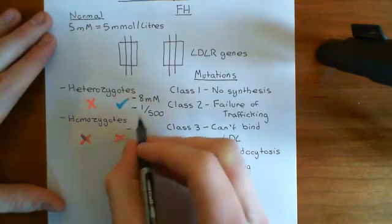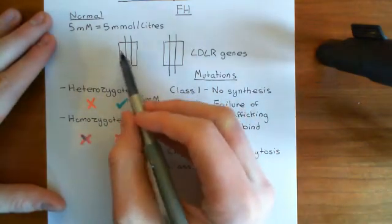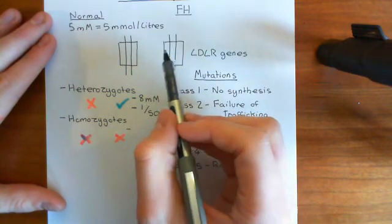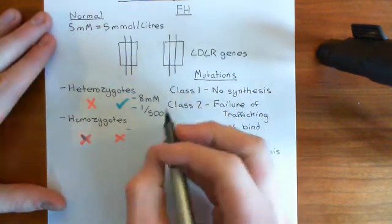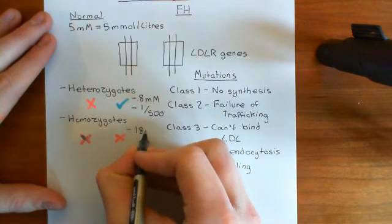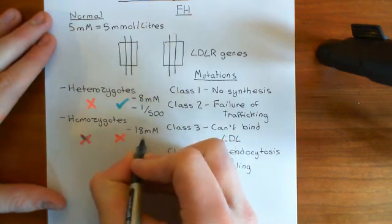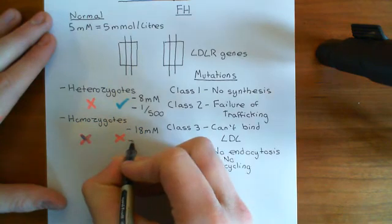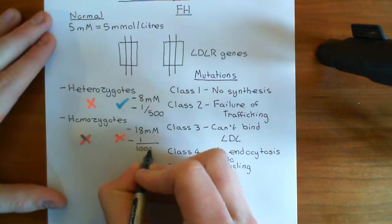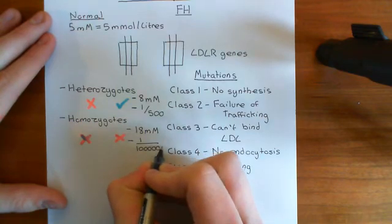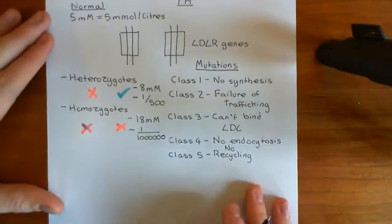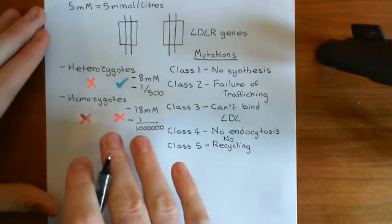Homozygotes, if you have two loss of function mutations in the LDL receptor, you're going to have far too much LDL staying within the blood, and this can lead to blood cholesterol levels of around 18 millimolar. Homozygotes are much, much rarer — around one in a million people — and they generally die in childhood, so they don't survive that long.